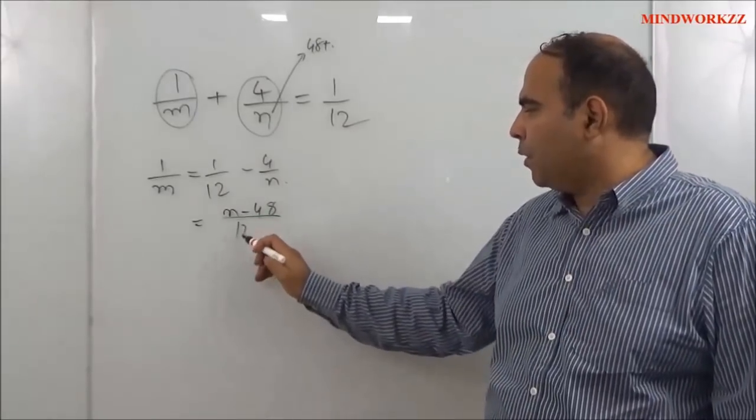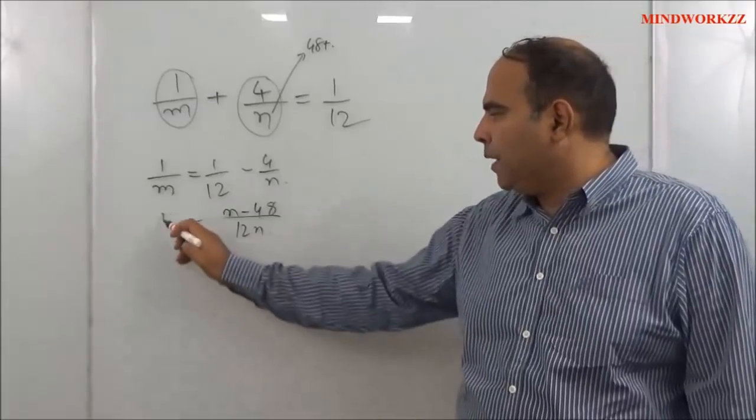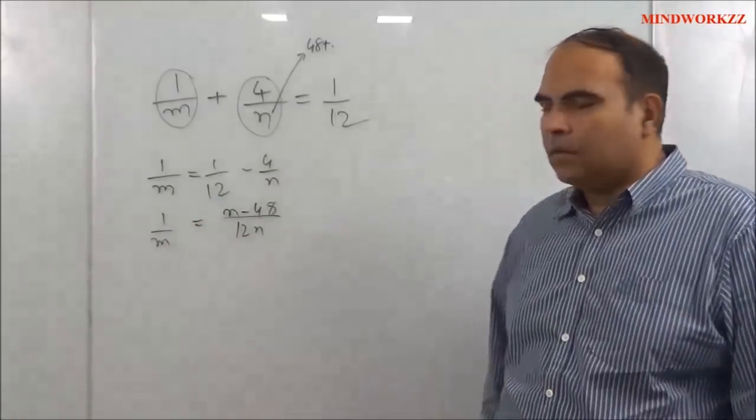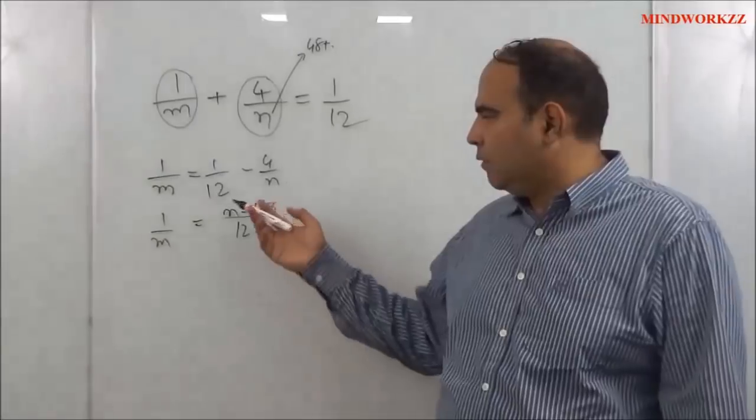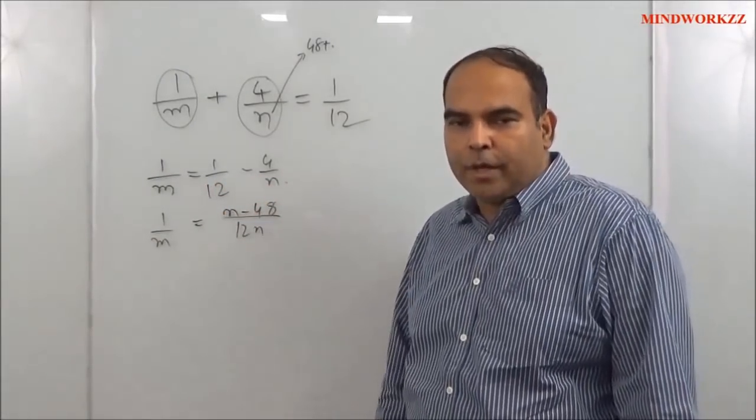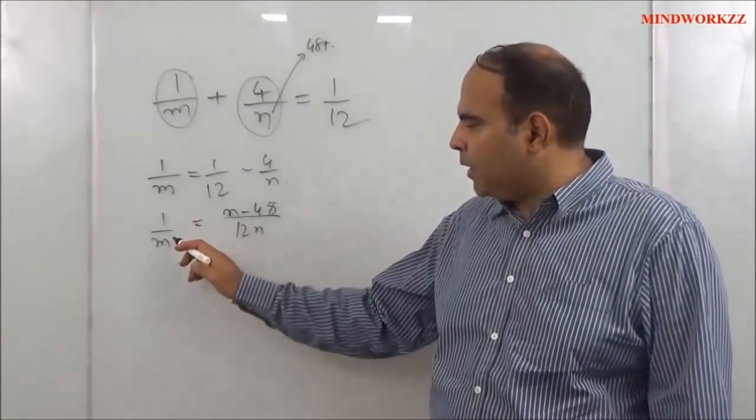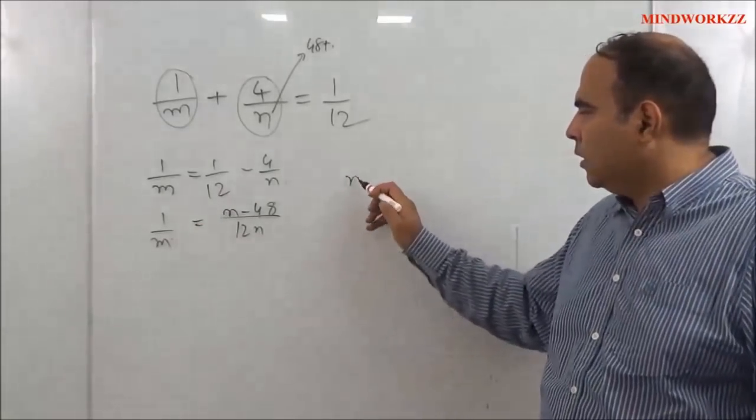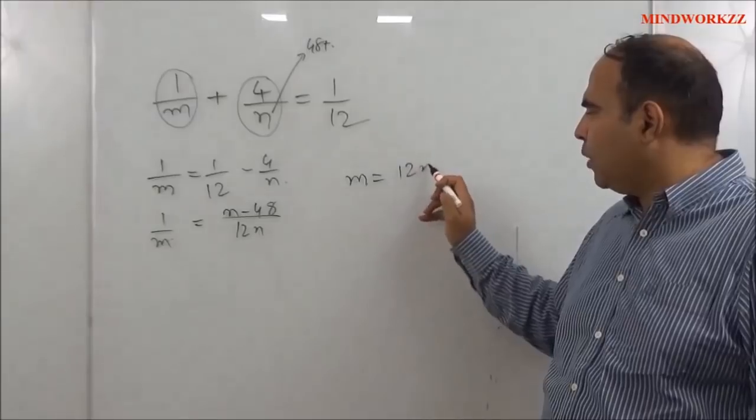upon 12n being 1/m. If I take the LCM of 12n, it will be 12n in the denominator and n - 48 on the numerator. And if m has to be an integer, it means that the value of m should be 12n upon n - 48.